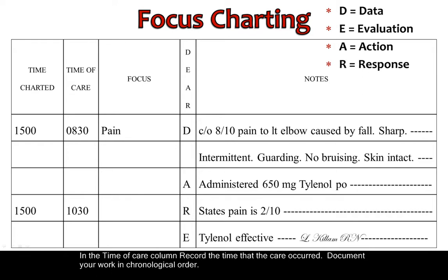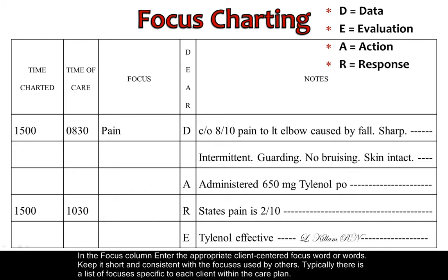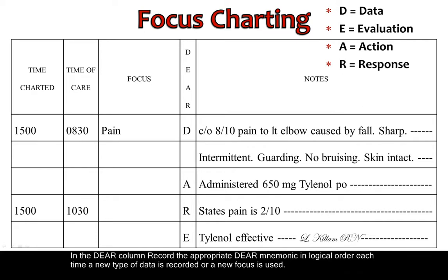Document your work in chronological order. In the focus column, enter the appropriate client-centered focus word or words. Keep it short and consistent with the focuses used by others. Typically, there is a list of focuses specific to each client within the care plan. In the DEAR column, record the appropriate DEAR mnemonic in logical order, each time a new type of data is recorded or a new focus is used.